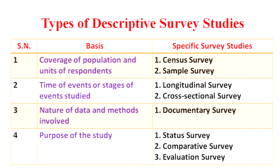There are different types of descriptive survey studies. On the basis of coverage of population and units of respondents, you can conduct a census survey or a sample survey. On the basis of time of events studied, it may be a longitudinal survey or a cross-sectional survey. On the basis of nature of data and methods involved, it is a documentary survey. And on the basis of purpose, it may be a status survey, comparative survey, or evaluative survey.